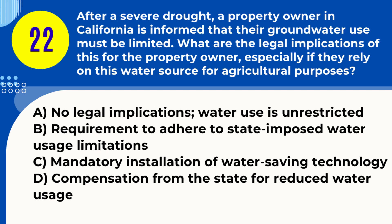Question 22. After a severe drought, a property owner in California is informed that their groundwater use must be limited. What are the legal implications of this for the property owner, especially if they rely on this water source for agricultural purposes? A. No legal implications; water use is unrestricted. B. Requirement to adhere to state-imposed water usage limitations. C. Mandatory installation of water-saving technology. D. Compensation from the state for reduced water usage. Answer: B. In drought conditions, California property owners, including those using groundwater for agriculture, may face legal restrictions on water usage to conserve resources.